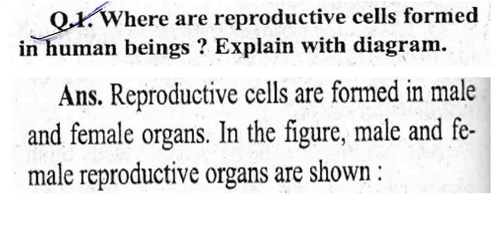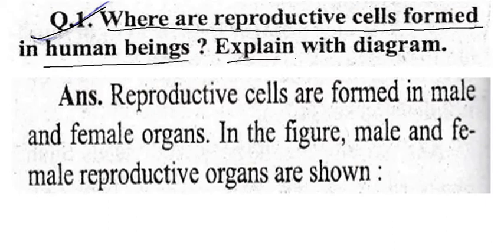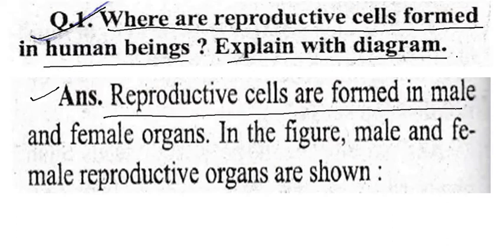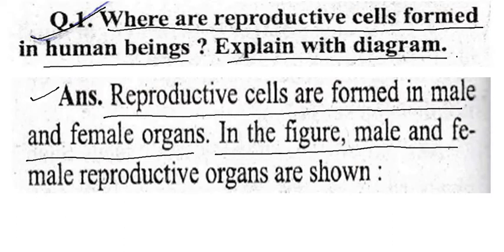An important question: where are the reproductive cells formed in human beings? Explain with a diagram. Answer: reproductive cells are formed in male and female organs. In the figure, male and female reproductive organs are shown. First, I want to show the cells — this cell is the man's cell and it is called sperm. The egg is of big size and it is found in the female parts.